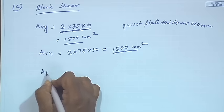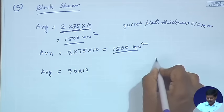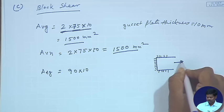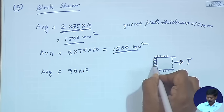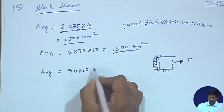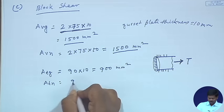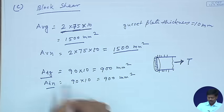Similarly, Atg — the gross area due to tension — is 90 × 10 = 900 mm², which is the area perpendicular to the direction of the force. Atn also equals Atg = 900 mm², again because there are no bolt holes in a weld connection. So we have Avg = Avn = 1500 mm² and Atg = Atn = 900 mm².